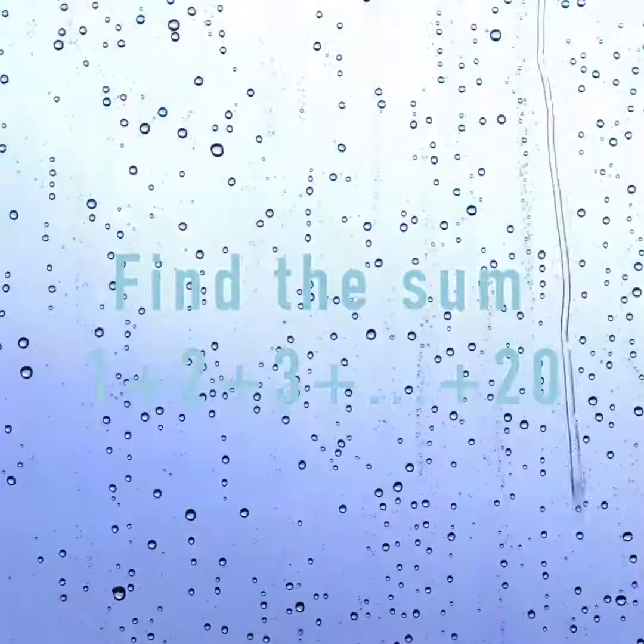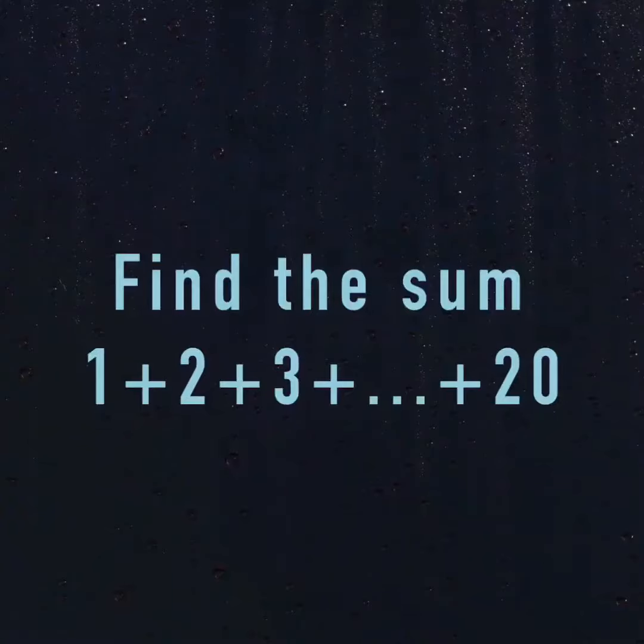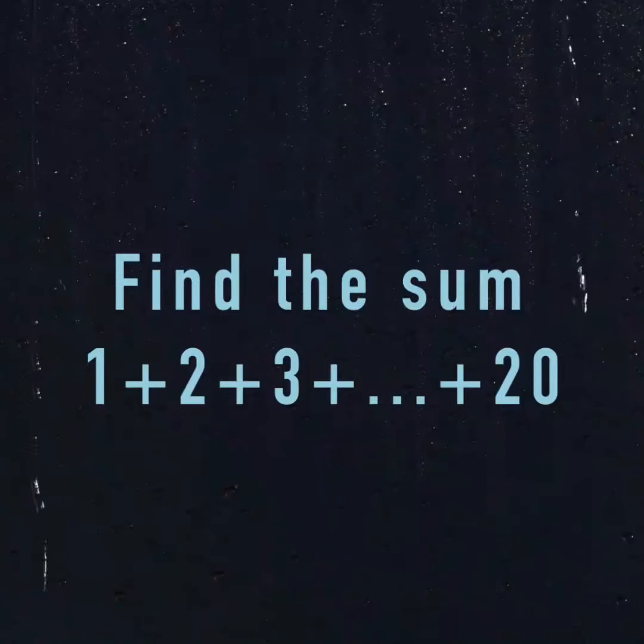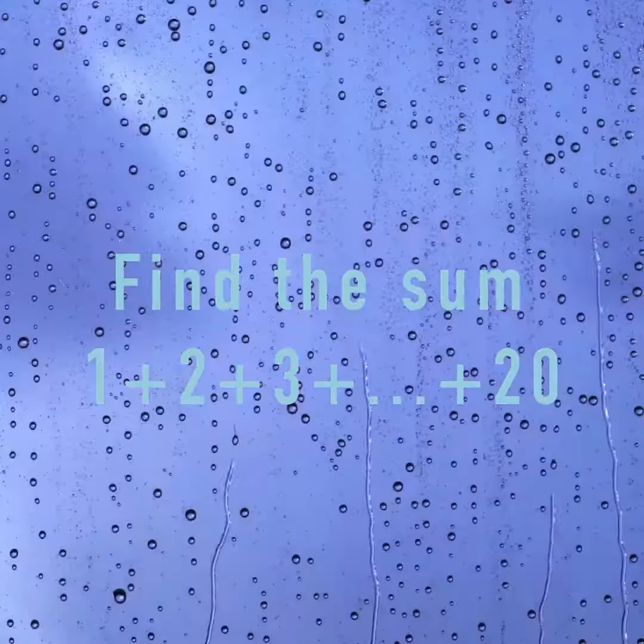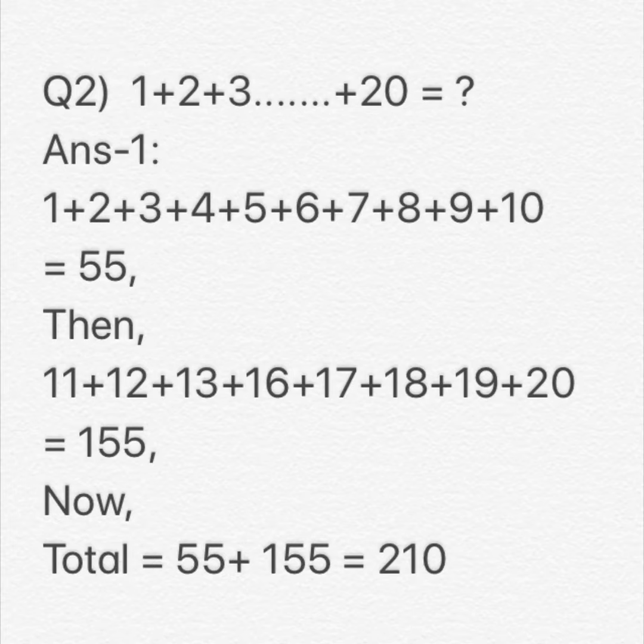Let's learn the ways in which the sum of first 20 natural numbers could be found. One way is to write the natural numbers starting from 1